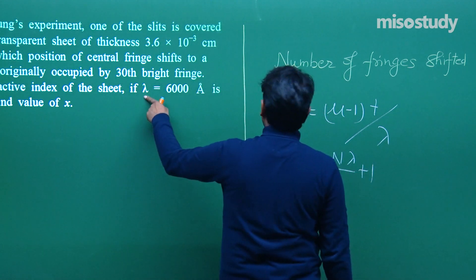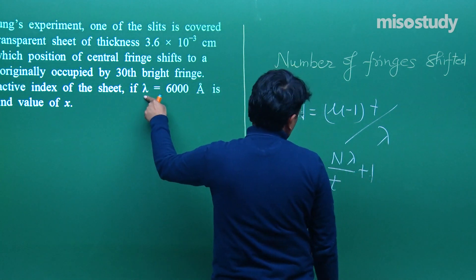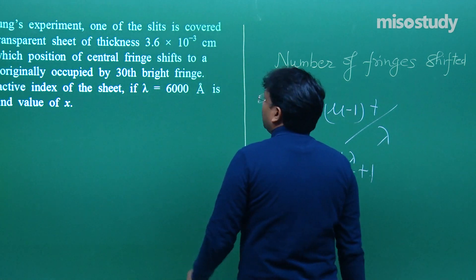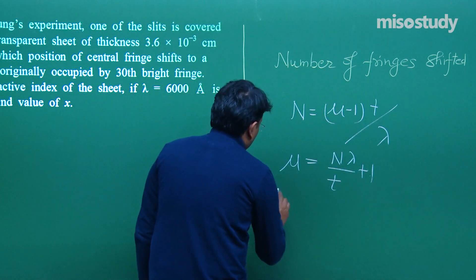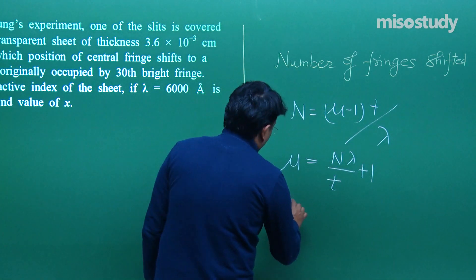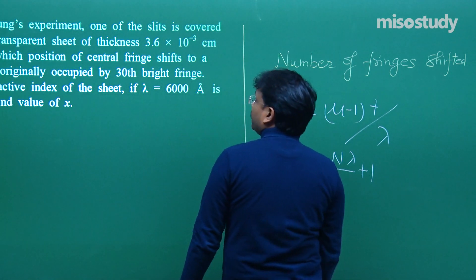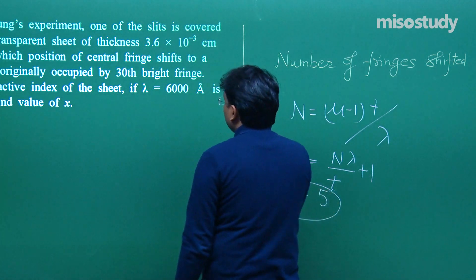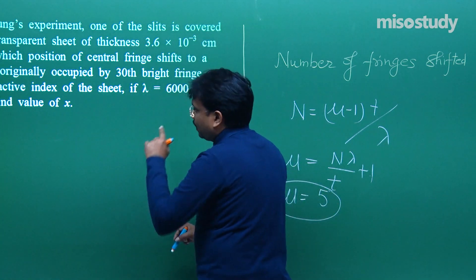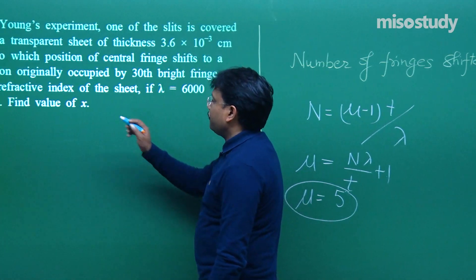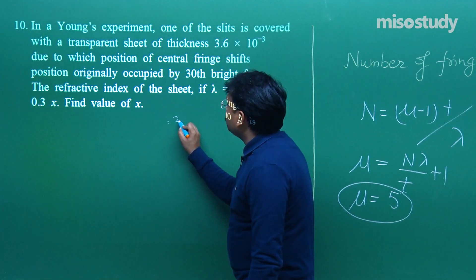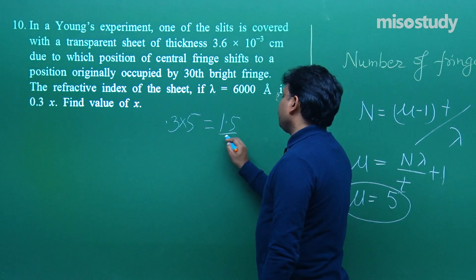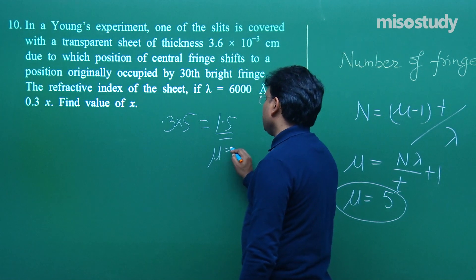Substituting values: n = 30, λ = 6000 Å, T = 0.3x mm (given). Solving: μ = (30 × λ)/T + 1 = 5. So μ = 5, and since T = 0.3x, we get x = 5. Therefore μ = 0.3 × 5 = 1.5. That is the refractive index, which is a normal physical range — similar to water or glass.